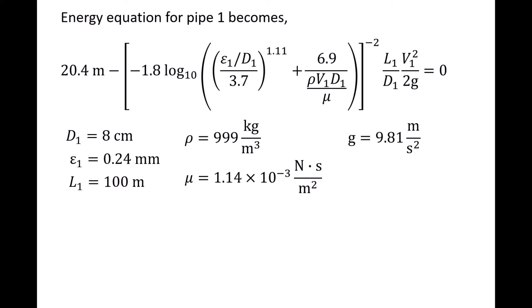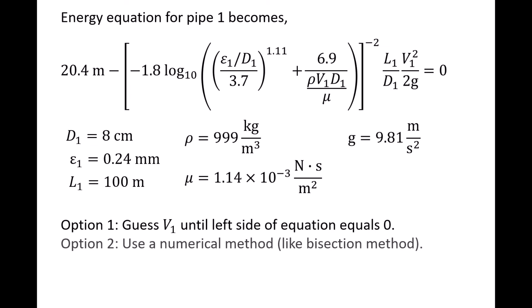Notice that the right side of the equation is zero. This means we only need to find a value of v1 that will make the left side of the equation zero as well. The first option for solving this equation involves us guessing a value of v1 and then refining that guess until the left side of the equation is close enough to zero that we're satisfied. The second option is to use a numerical method to solve for v1 in a more systematic manner than just guessing. Common numerical methods that solve nonlinear algebraic equations, like the energy equation shown here, are the bisection method, Newton-Raphson method, and secant method.